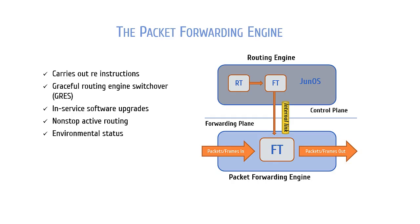So now you should have a pretty good understanding of how the Junos OS processes and forwards traffic. Keeping the control and forwarding planes separate from each other allows for fast, protected traffic forwarding and overall OS stability. And that's what the Junos OS is all about.